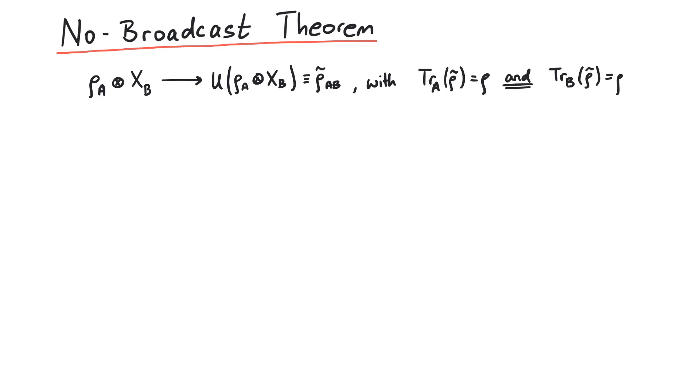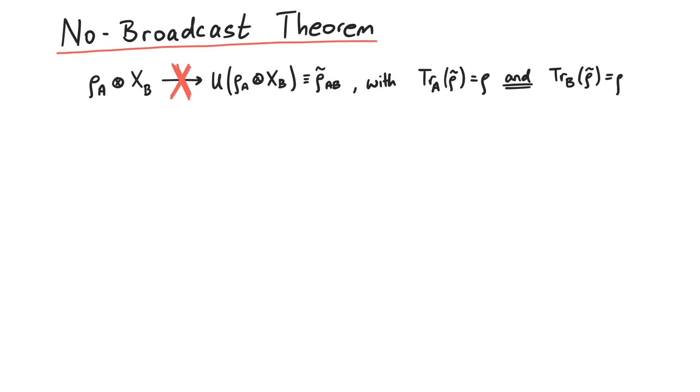Whatever rho we are starting with, there is absolutely no unitary transformation u that can create such a state rho tilde. The proof of the no-broadcast theorem is rather involved, so we put a link in the description if you want to check it out. That's pretty much it for the no-cloning theorem. Thanks for watching.